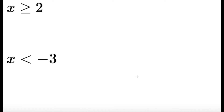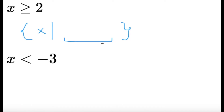The set builder form is not that difficult. We write a pair of braces, put the variable x inside, then a bar — which we read as 'such that' — followed by the condition. So for x ≥ 2, we read it as: 'the set of all values of x such that x is greater than or equal to 2.'